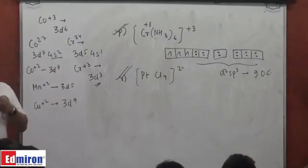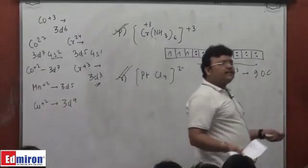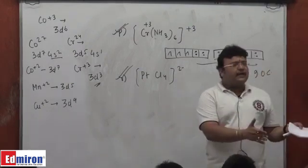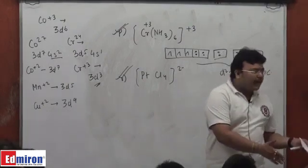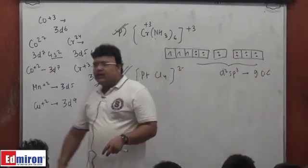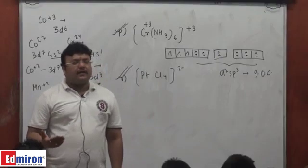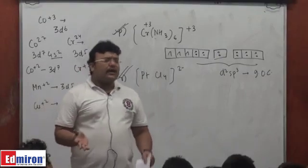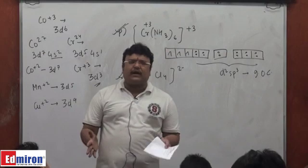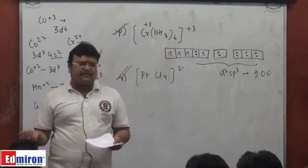Even for copper, I wanted you to remember ammonia as a strong field ligand because it was protruding into the inner orbital. With coordination number 4 and a strong field ligand, it is more likely to get dsp2, and with coordination number 6, a strong field ligand is more likely to take up d2sp3 hybridization.